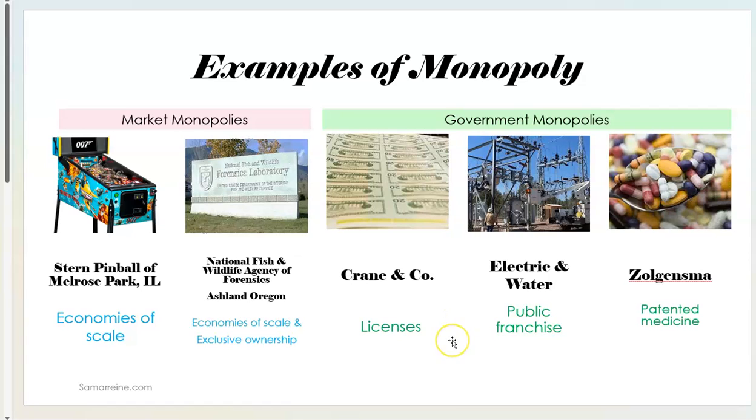Now as far as government monopolies, Crane & Company which I mentioned before actually produces all the linen paper, has the only license in the United States to do so. That is a monopoly due to license, that's a legal monopoly or a government monopoly. Electric and water companies, those are public franchises. Your cable company in town, your natural gas, if you can't buy it from anybody else this is whom you have to deal with, that makes it a public franchise. And any patented anything, and I am using medicine, this is the most expensive medicine in the world, it has to do with the spine and spinal injuries.